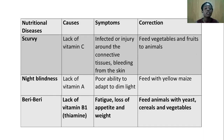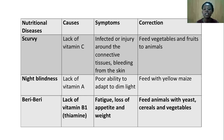Another deficiency is scurvy, caused by lack of vitamin C. Symptoms include infection or injury around the connective tissue and bleeding from the skin. To correct scurvy, feed vegetables and fruits to animals, as these are very rich in vitamin C. Next, night blindness is caused by a lack of vitamin A — that is poor ability to adapt to darkness. Feed with yellow maize to correct that. Finally, beriberi is caused by lack of vitamin B1. Symptoms include fatigue, loss of appetite, and weight loss. Feed the animals with meat, cereals, and vegetables to correct beriberi.